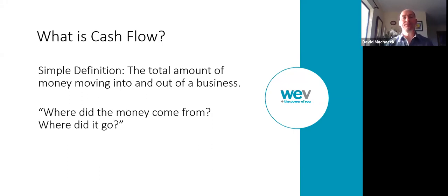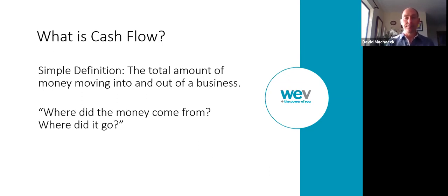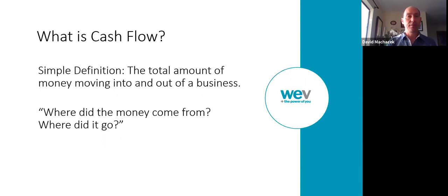What is cash flow? A simple definition is the total money coming into a business and moving out of a business. In basic bookkeeping and accounting, we always know where money comes from and where it goes. Cash flow analysis is about where does my money come from — income, loans, and so forth — and where did it go — paying off a loan, buying inventory, or paying expenses.